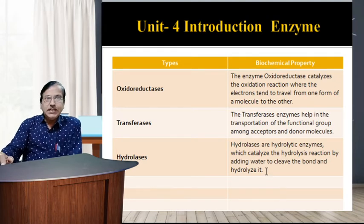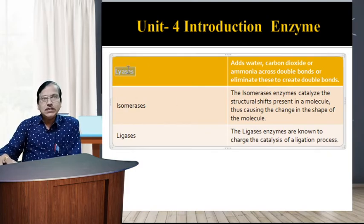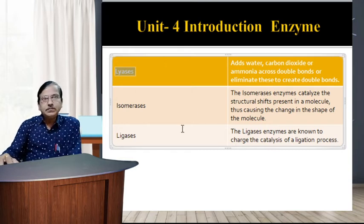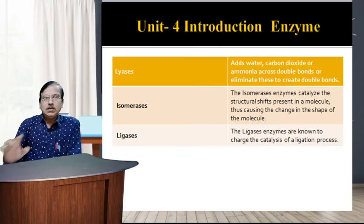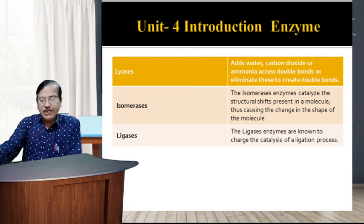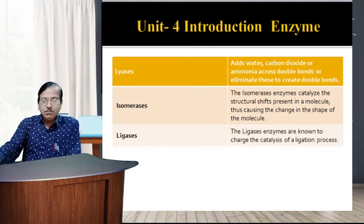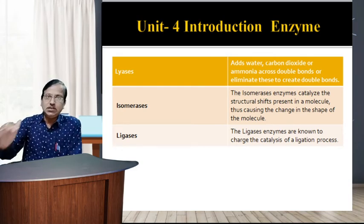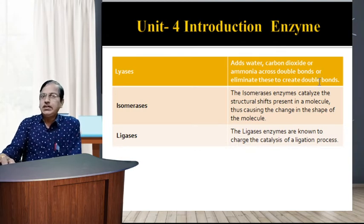The third class is hydrolases — enzymes that bring about hydrolysis of various compounds. The reaction is: A–B + H₂O → A–H + B–OH. The biochemical property is that hydrolases catalyze hydrolysis reactions by adding water to cleave the bond. The fourth class is lyases — enzymes specialized in the addition or removal of water, ammonia, CO₂, etc. The reaction involves addition or elimination across double bonds.